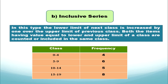For example: 0 to 4, then 4 plus 1 becomes 5 so the next class is 5 to 9, then 9 plus 1 becomes 10 so the next is 10 to 14, then 15 to 19. The class interval gap remains the same throughout. The upper limit is not equal to the lower limit of the next class, and both limits are included to make a tally bar.